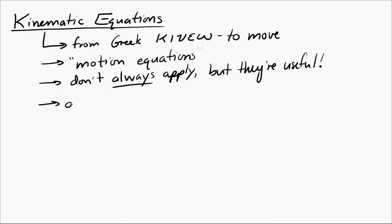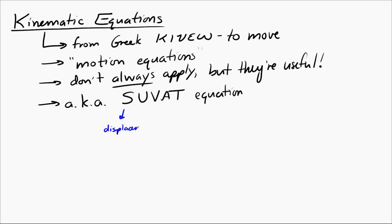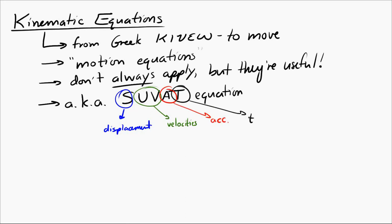Sometimes they are also called the SUVAT equations in IB, and the reason for that is because the kinematic equations are a mix of five different variables: s, u, v, a, and t. The s represents displacement, u represents initial velocity, v represents final velocity, a represents acceleration, and t represents time. I will write down the four equations that are considered the kinematic or SUVAT equations.